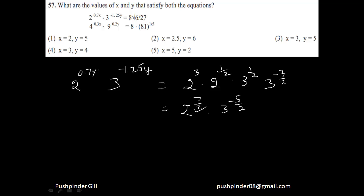This power of 2 is equal to this power of 2, this power of 3 is equal to this power of 3 because these are both the same values. So 0.7 times x is going to be equal to 7/2. That means x is going to be equal to 5.